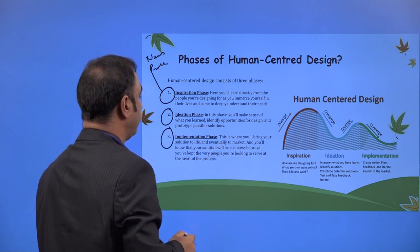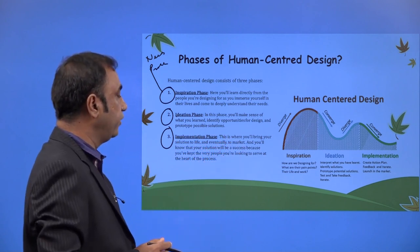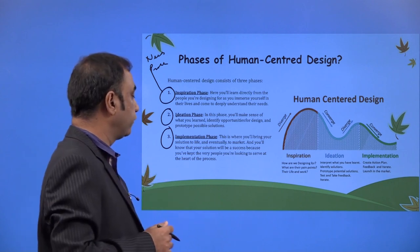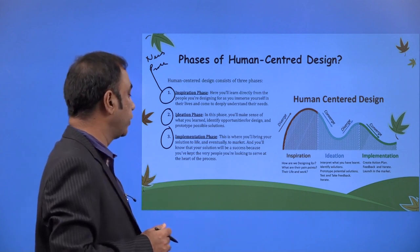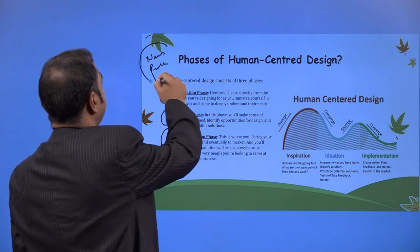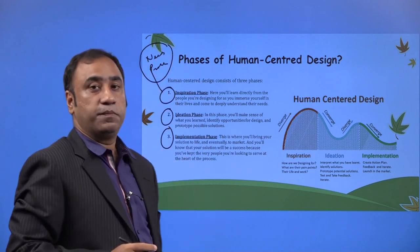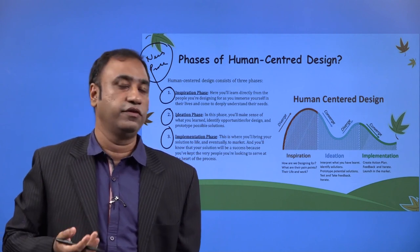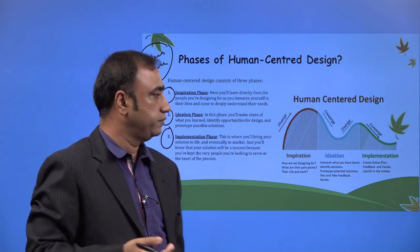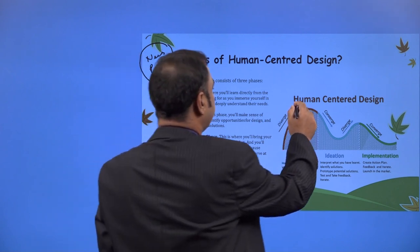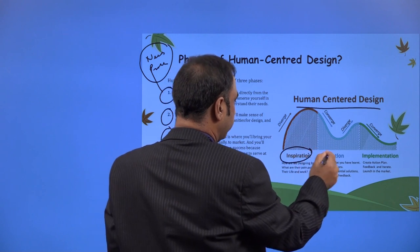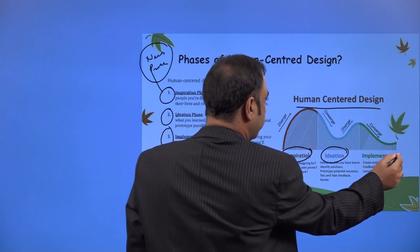The Implementation phase is where you bring your solution to life and eventually to the market — you launch your product. You will know your solution will be a success because you have kept the very people you are looking to serve at the heart of the process. You are creating the product for the people whose problems you are solving. This is the journey from problem to solution — this is Human-Centered Design.